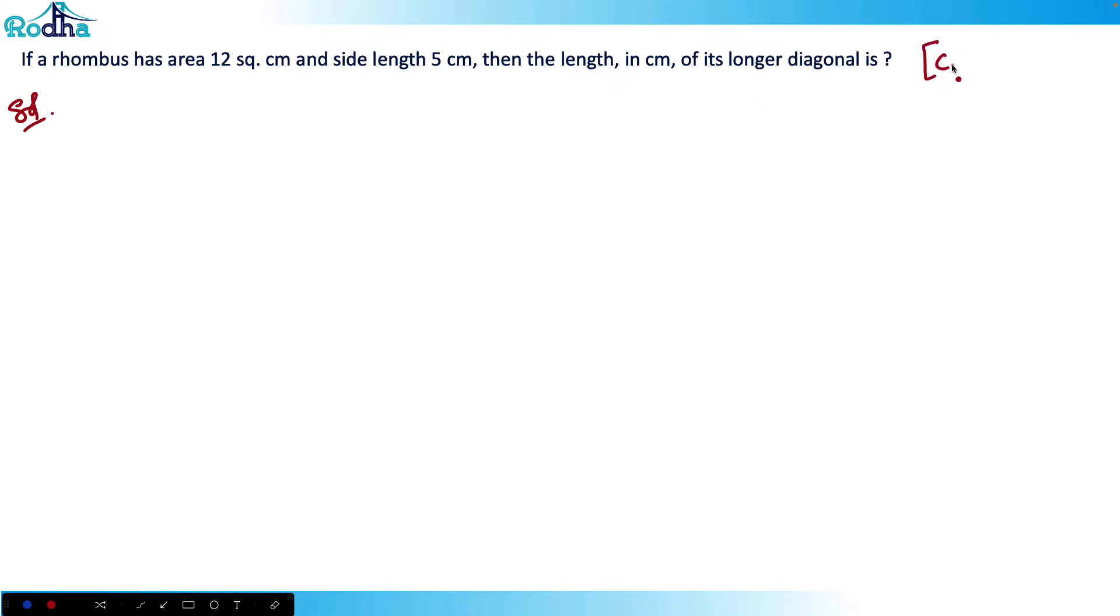This is from CAT 2021 Slot 2. Let's see how we can solve this in a more efficient way. So the rhombus has area 12 square centimeters.